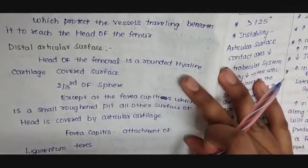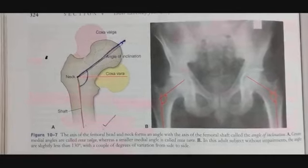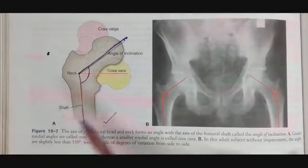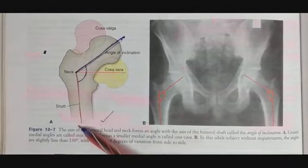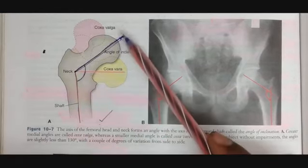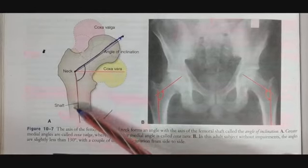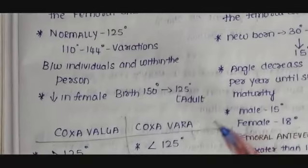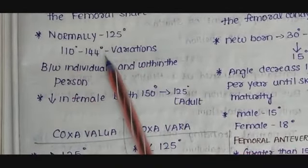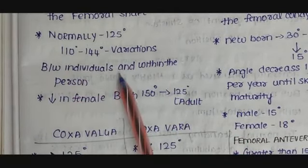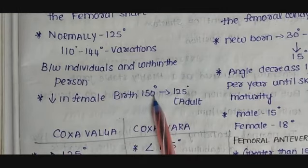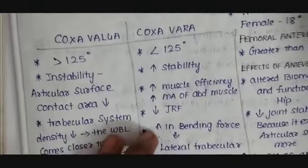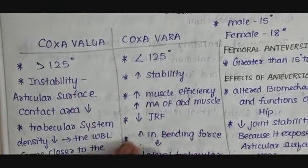Let us discuss about the angulation of the femur. The angle of inclination is the angle formed between an axis passing through the femoral head and neck and the longitudinal axis of the femoral shaft. Normally it is 125 degrees, ranging from 110 to 144 degrees. It is reduced in females. At birth the angle of inclination is 150 degrees, and it decreases to about 125 degrees in adults. An increase in the angle of inclination is referred to as coxa valga, and a decrease is referred to as coxa vara.